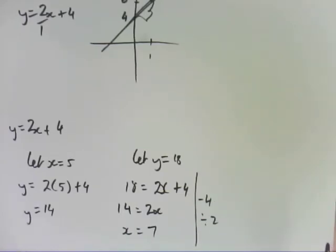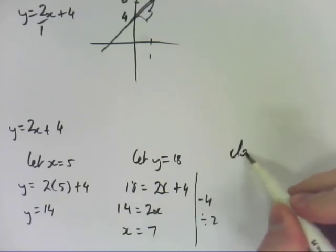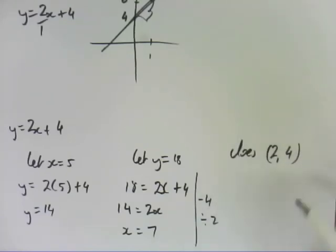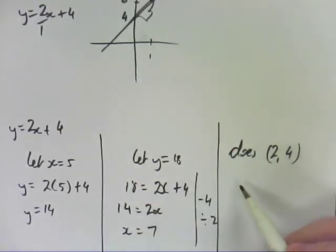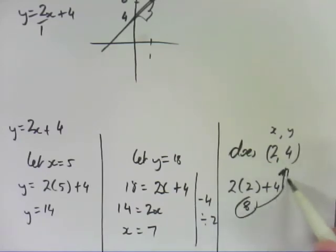And then it'll ask you if a particular point, so does 2, 4 lie on the line, and that's really easy to work out. You just substitute in, remember that it's x comma y, so I'm going to substitute the x in. So 2 times 2 plus 4 is 8. Because that number isn't that number, then the answer is no, it doesn't. If that number that I come out with there for y after I substitute in the x value is that number there, if they're the same, then yes it is on the line. Otherwise, they're not on the line.